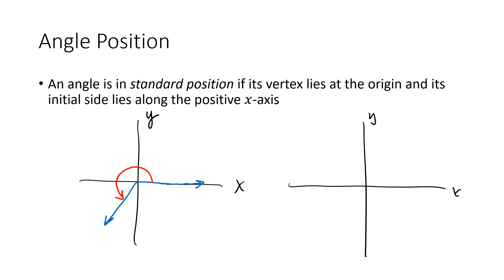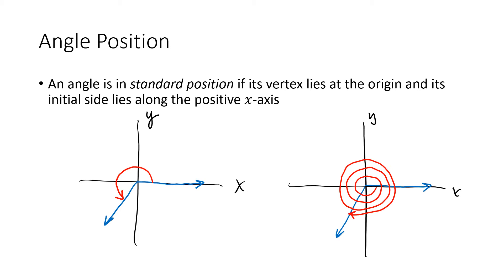With an angle in standard position, here's my initial side and here's my terminal side. We don't have quite as much flexibility as before because I'm insisting that the initial side is along the positive x-axis. Whatever rotation I draw has to start on that positive x-axis, but I can still go clockwise, counterclockwise, or spin around many times — for example, that rotation would also be represented by those two rays and that angle would still be in standard position.